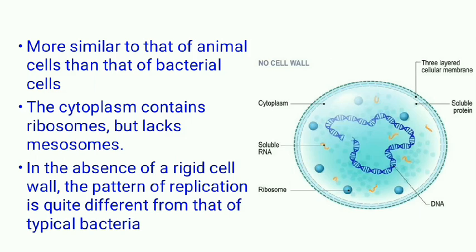The cell is enclosed by a limiting membrane more similar to that of animal cells than bacterial cells, because of sterols present in the membrane. The cytoplasm contains ribosomes but lacks mesosomes, and there is no nuclear membrane. In some stains, amorphous material on the outer surface of the membrane suggests the existence of a capsule. The mechanism of division in mycoplasma is controversial; microscopic observation suggests that new elementary particles arise by fragmentation of filamentous cells containing several discrete DNA components.